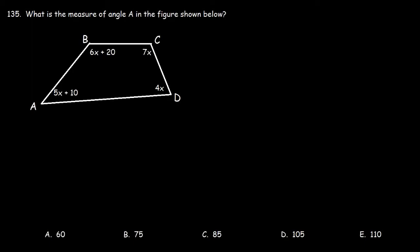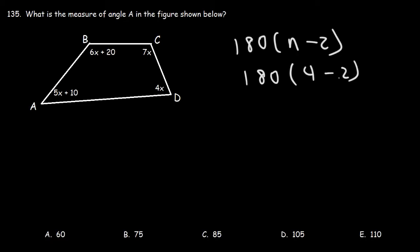Number 135: What is the measure of angle A in the figure shown below? What we have here is a quadrilateral, a four-sided figure. The sum of all interior angles of a quadrilateral is 360. You can determine that using the formula where n represents the number of sides: 4 minus 2 is 2, and 180 times 2 is 360.